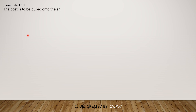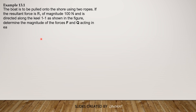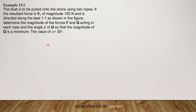Example 13.1. The boat is to be pulled onto the shore using two ropes. If the resultant force R1 of magnitude 100 N is directed along the keel 1-1 as shown in the figure, determine the magnitude of the force F and Q acting in each rope and the angle beta of Q so that the magnitude of Q is a minimum. The value of alpha is 30 degrees. Take note that the resultant R1 is directed along the keel 1-1.